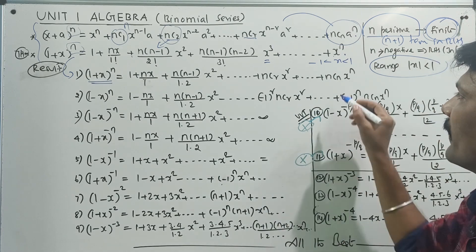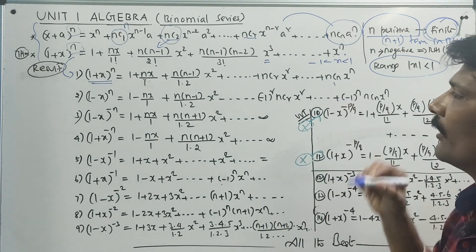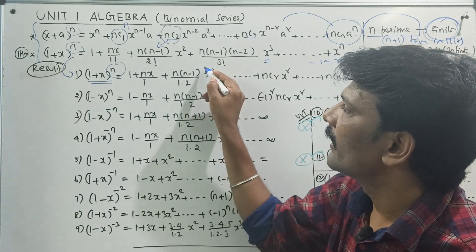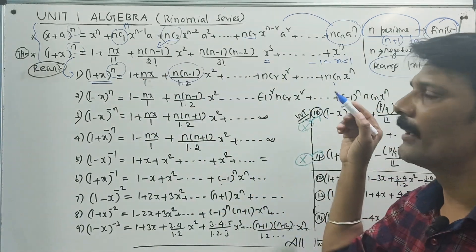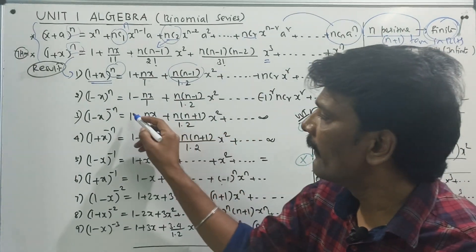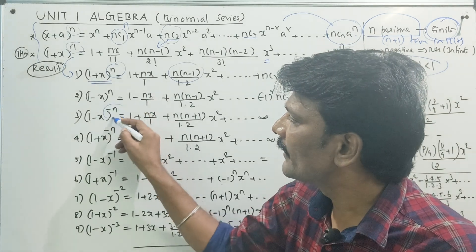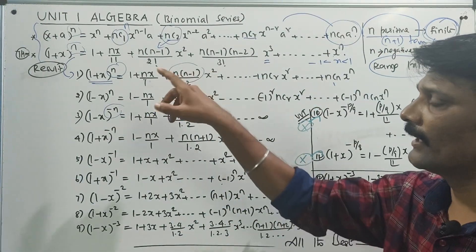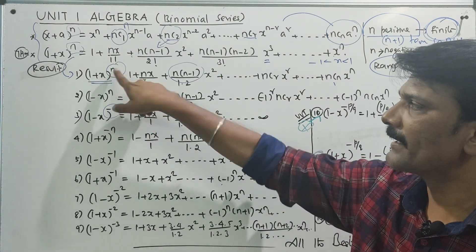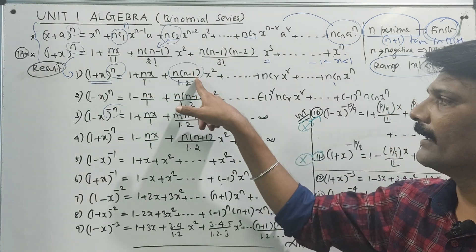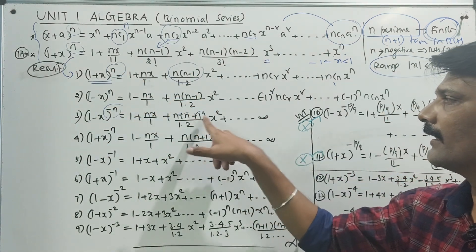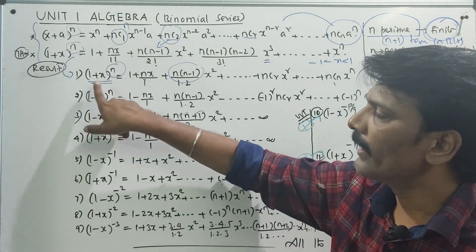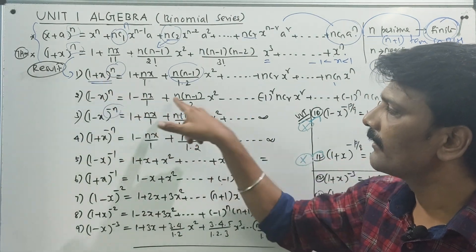ncn value is 1. So 1 plus n, plus n into n minus 1, plus n into n minus 1 into n minus 2. If the sign is plus, you get a positive series. If the sign is minus, it will be an alternate series.